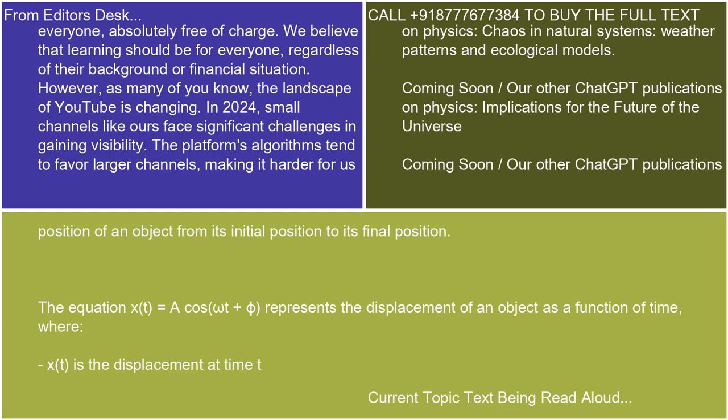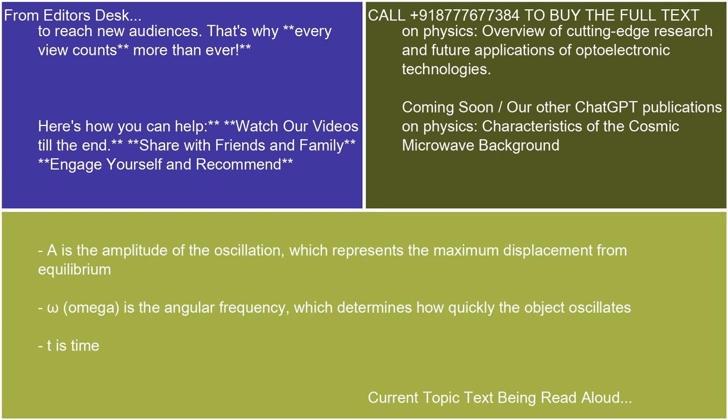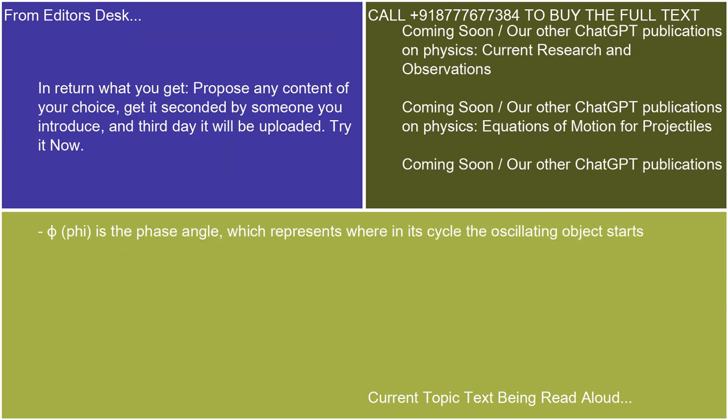Where x(t) is the displacement at time t. A is the amplitude of the oscillation, which represents the maximum displacement from equilibrium. Omega (ω) is the angular frequency, which determines how quickly the object oscillates. T is time. Phi (φ) is the phase angle, which represents where in its cycle the oscillating object starts.